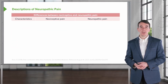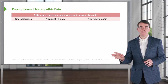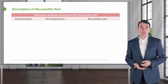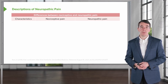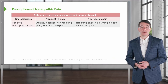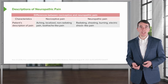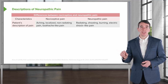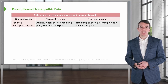When thinking about pain in general, there are two types: nociceptive pain and neuropathic pain. Conditions can result in both, but we hear different descriptions, evaluate patients differently, and use different treatments for each. Nociceptive pain is described typically as an aching — it may be localized and non-radiating, like that toothache pain that patients can describe.